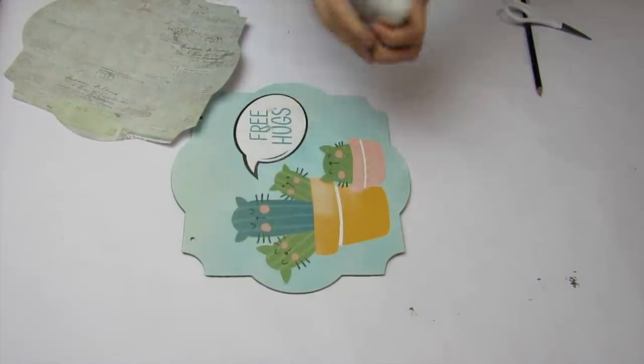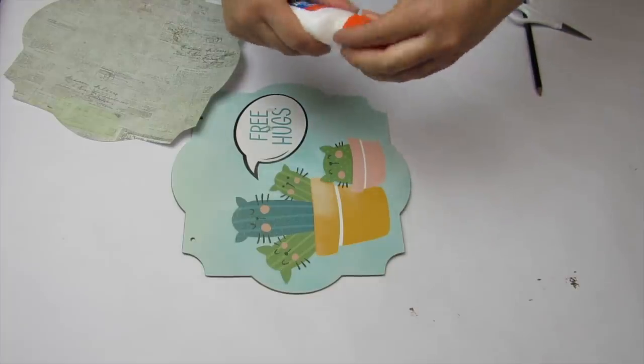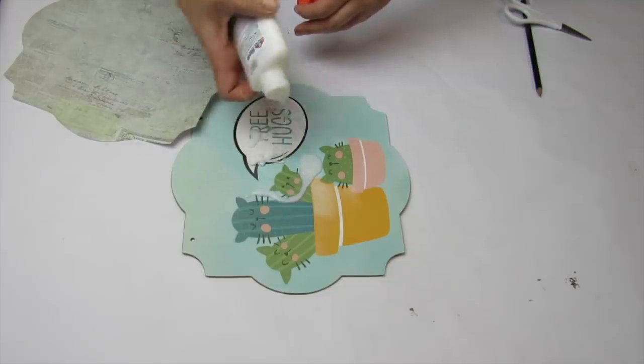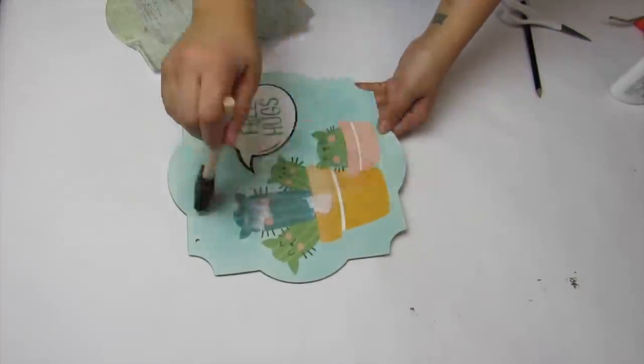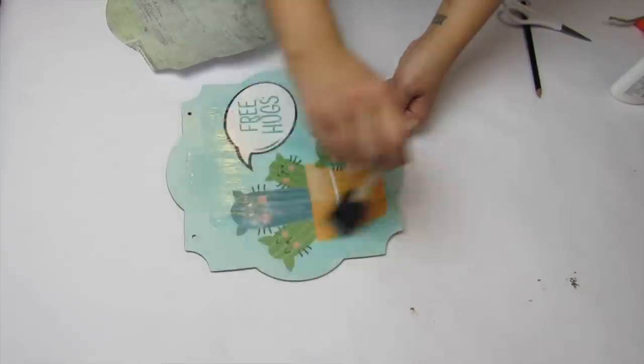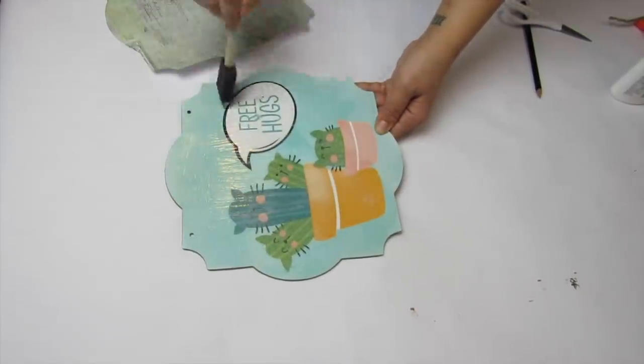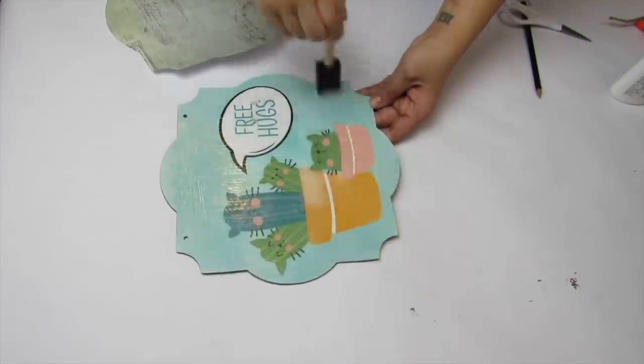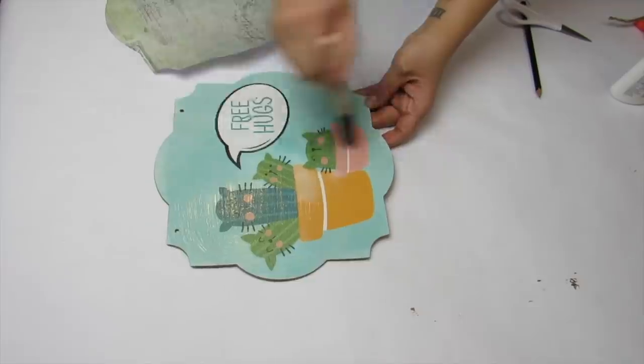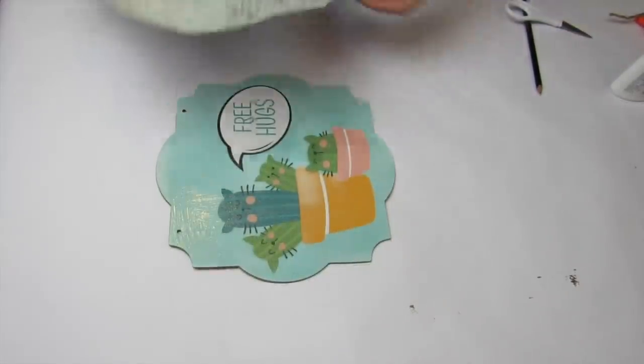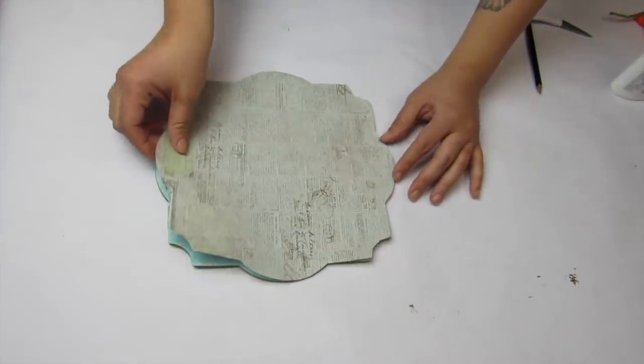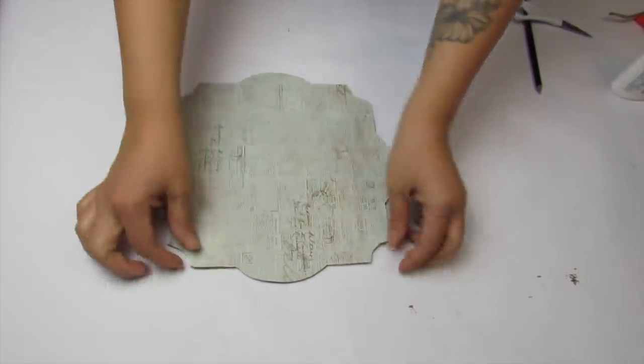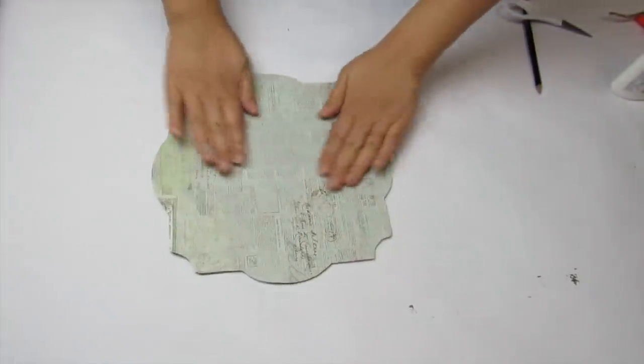Now usually I use Mod Podge but I ran out, so I've just been using some Elmer's glue and smoothing out the glue with a foam brush. Honestly I like it just the same if not better. I find the Elmer's glue to be a little bit more forgiving. Once I use the foam brush to disperse all of the glue, I'm just going to put my scrapbook paper right on top, smoothing out any bubbles.